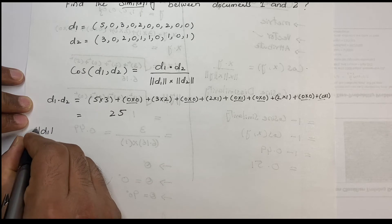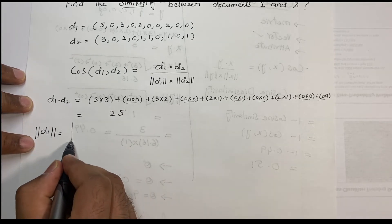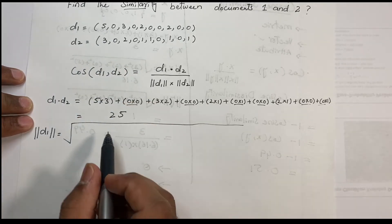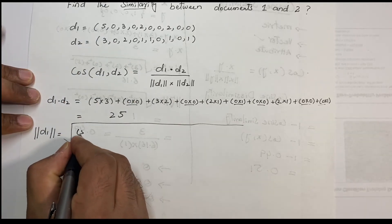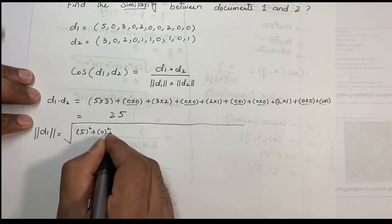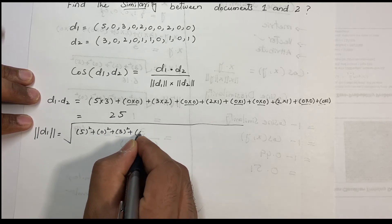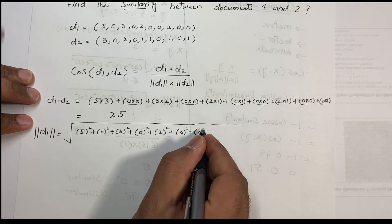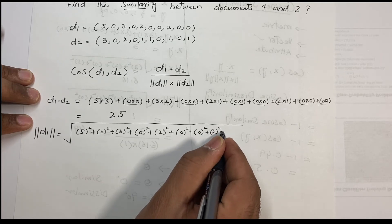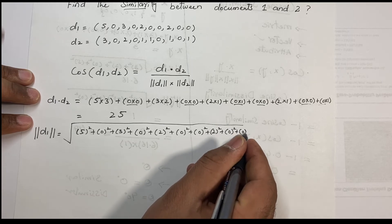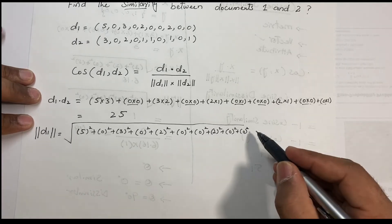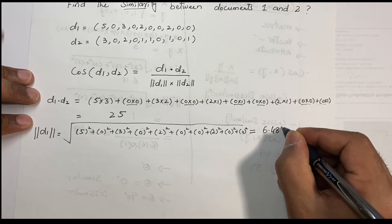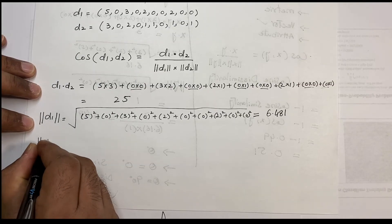Now we find the length of d1 by squaring each value and taking the square root: 5² + 0² + 3² + 0² + 2² + 0² + 0² + 2² + 0² + 0². The answer is 6.481.